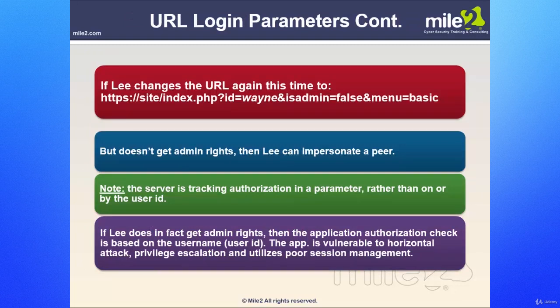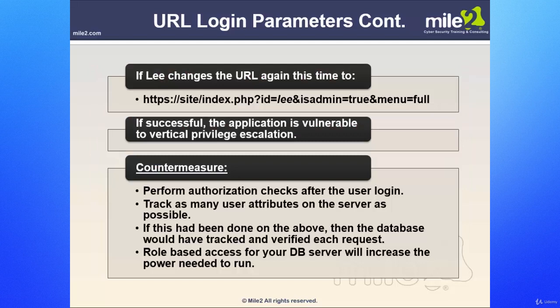Now let's change it again to Wayne. If we change the username but don't get admin access rights, then Lee can impersonate a peer — meaning the server is tracking authorization in a parameter rather than by user ID. If Lee does get admin rights, then the application's authorization check is based on the username. The application is then vulnerable to horizontal privilege escalation and utilizes poor session management — also one of our OWASP top ten. If Lee changes the URL and sets Lee as admin equals true and menu equals full, and it's successful, the application is vulnerable to vertical privilege escalation.